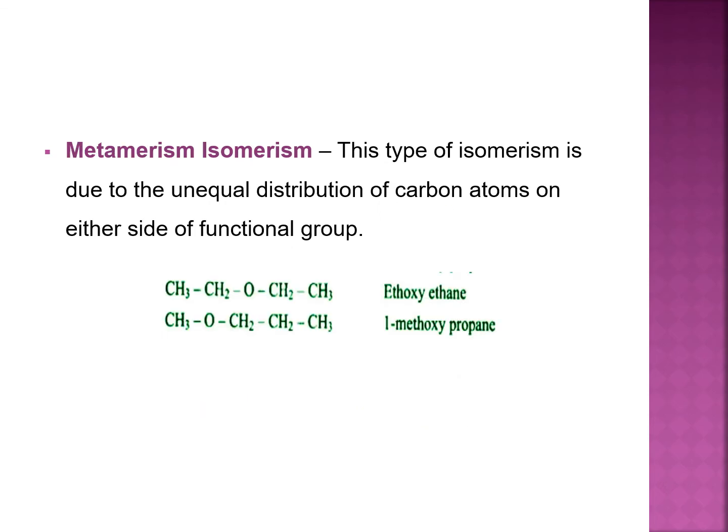Next, metamerism. This type of isomerism is due to unequal distribution of carbon atoms on either side of the functional group. In the first example there is equal distribution of carbon atoms on both sides of the oxygen atom — two carbon atoms on each side. In the second structure, a methyl group and a propyl group are attached on both sides of the oxygen atom.